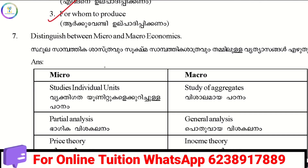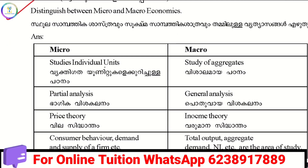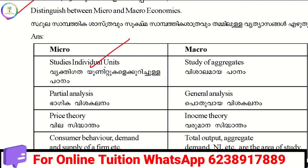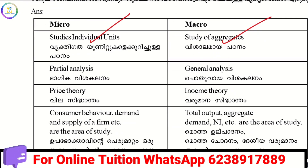When it comes to microeconomics, there remains a difference. In microeconomics, we study individual units, while under macroeconomics we study the economy as a whole. Microeconomics deals with partial analysis, while macroeconomics is concerned with total or aggregate analysis. The basis of microeconomics covers price theory, while macroeconomics is called income theory.